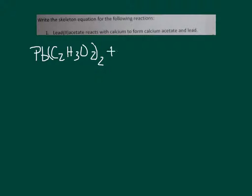Reacts with is plus. Calcium is just Ca. I know calcium has a plus two charge, but when it's by itself, you don't need it. To form, we put an arrow. Calcium acetate, which is calcium, and then there's the acetate ion again, C2H3O2.